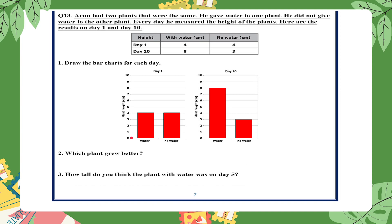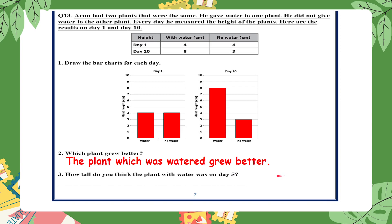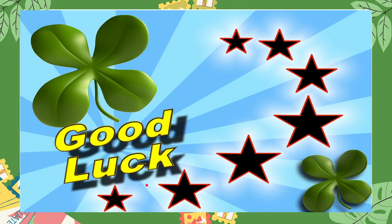Now you can make a conclusion from the results. Which plant grew better? The plant which was watered grew better. How tall do you think the plant with water was on day five? Looking at the chart for day one and day ten, maybe five or six centimeters. Thank you for listening, future scientists, and good luck!